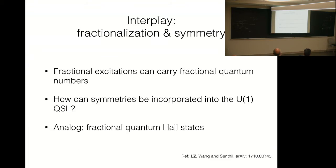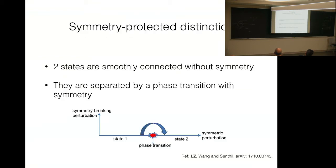Now, let me discuss the classification of symmetry-enriched U(1) quantum spin liquids. This is really a question about the interplay between fractionalization and symmetry. By now, it's very well known that fractional excitations can carry fractional quantum numbers. So, we can ask, how can global symmetries be incorporated into the U(1) quantum spin liquid? And there's an analog in fractional quantum Hall states. If we have a fractional quantum Hall state, with U(1) charge conservation symmetry, then we can ask, what kind of fractional charges can the fractional excitations carry?